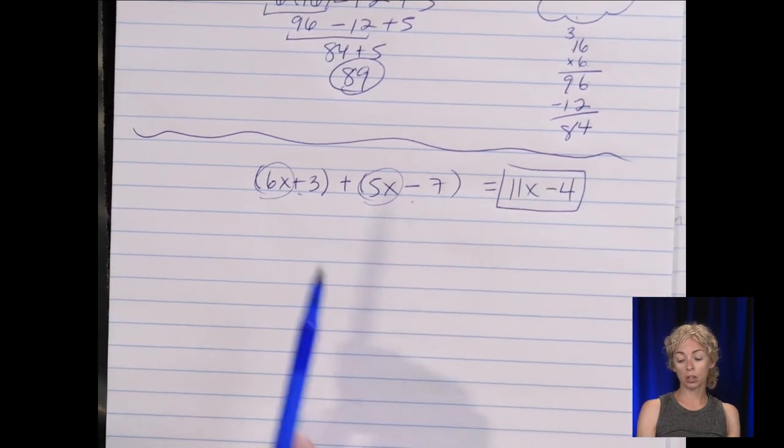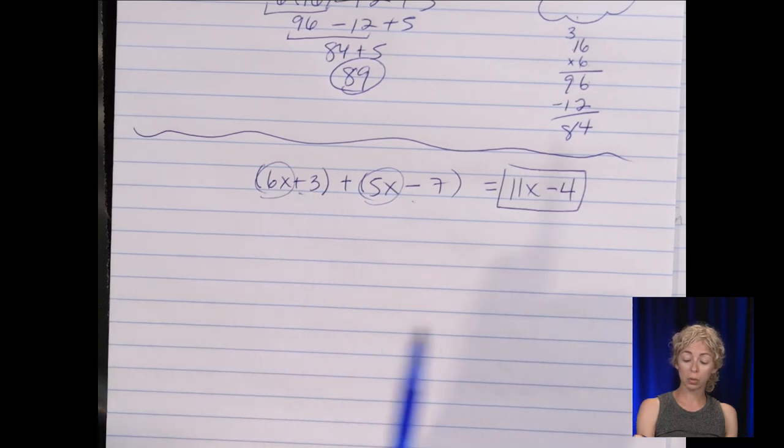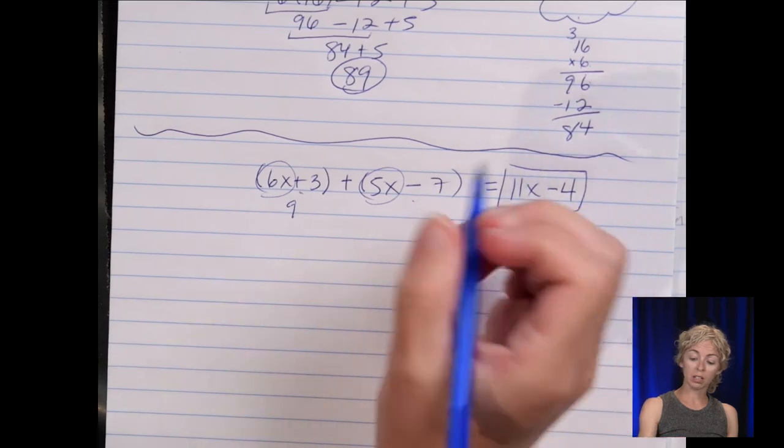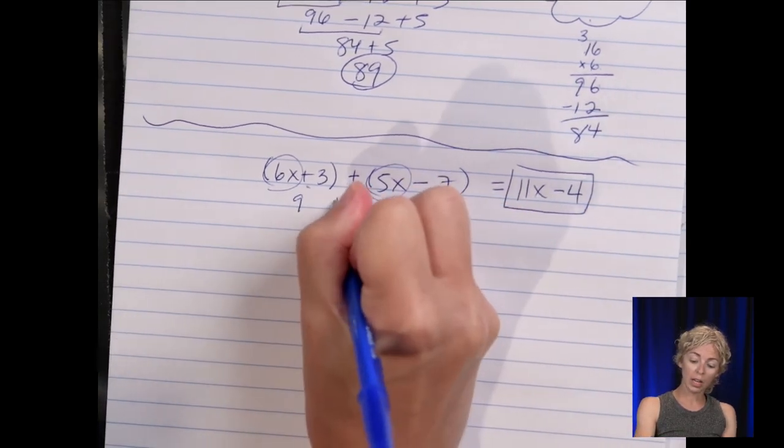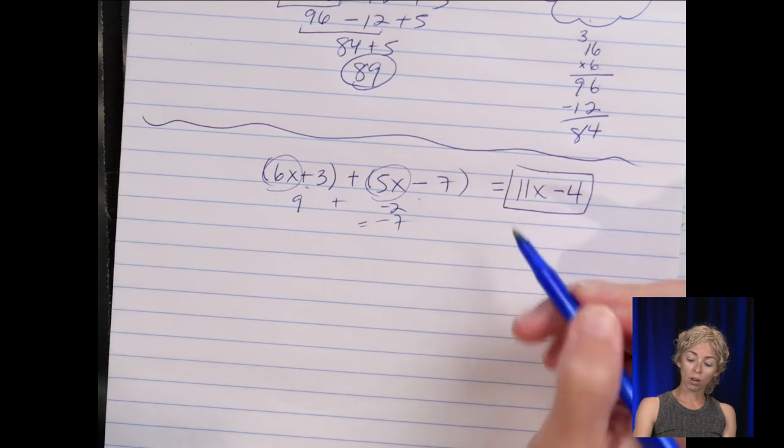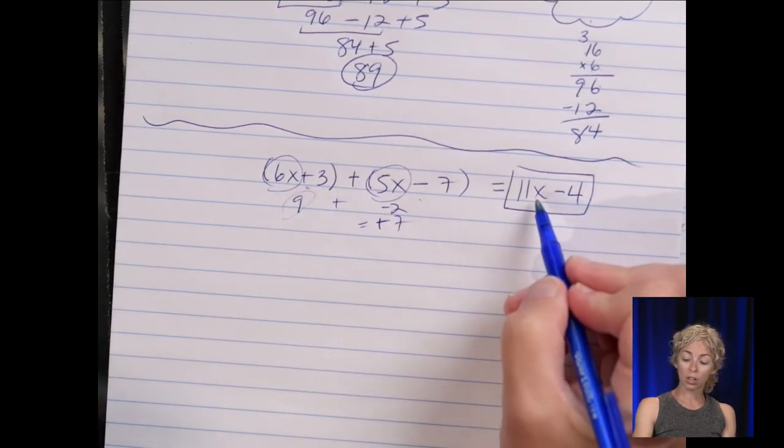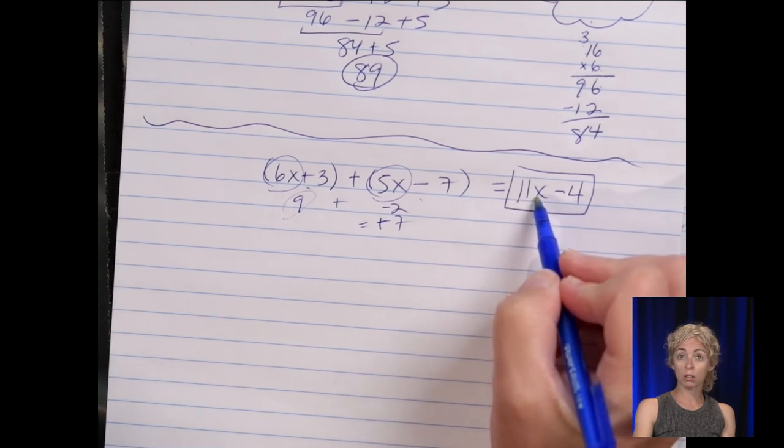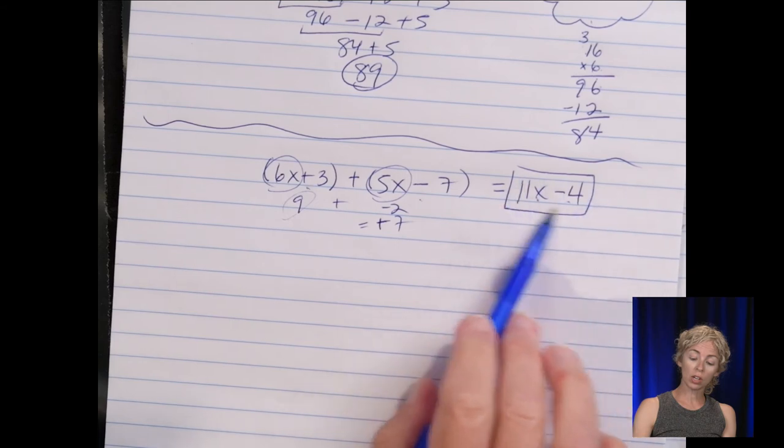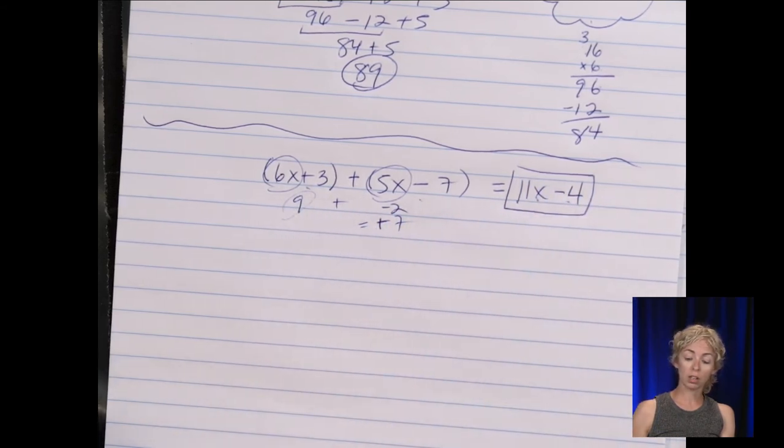And you can always check that you're right here too so say you plug in a one for x. Six times one six plus three is nine. Five times one five minus seven is a negative two when I add these two I get positive seven. So now I'm checking over here eleven times one is eleven minus four is seven it works. So you can always check your answer algebraically by evaluating it to see if you get the same number.